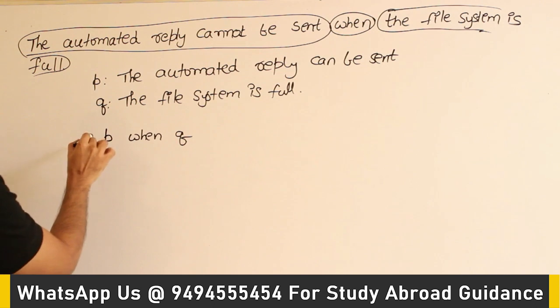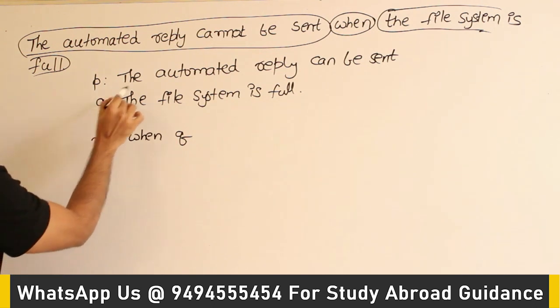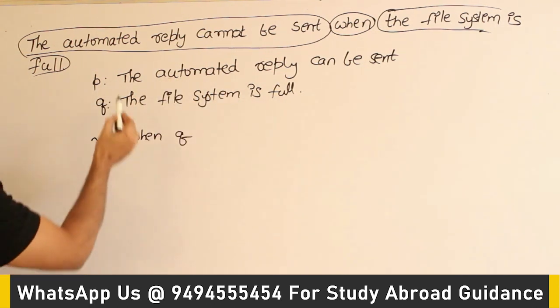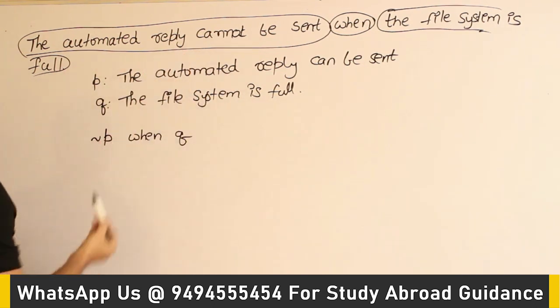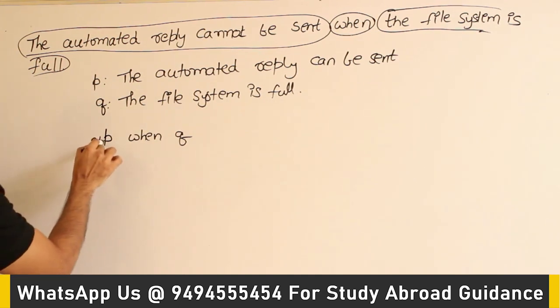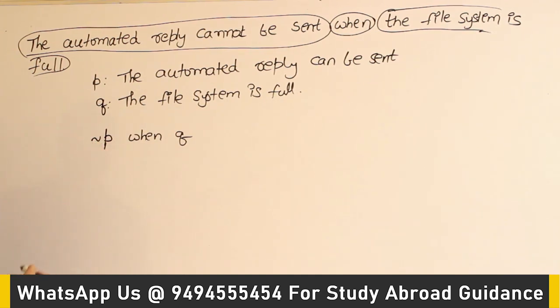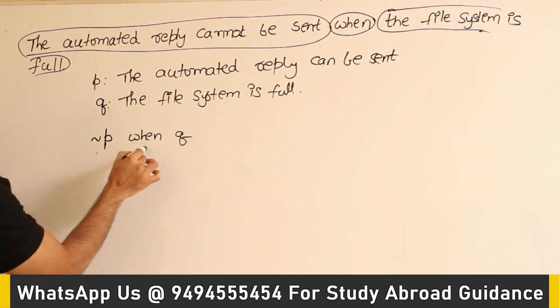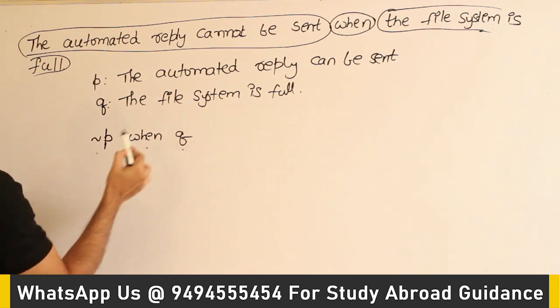I think it requires negation P, because if P denotes 'the automated reply can be sent,' then 'the automated reply cannot be sent' has to be represented using negation P. Therefore, it is negation P when Q.